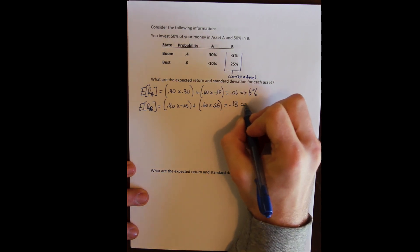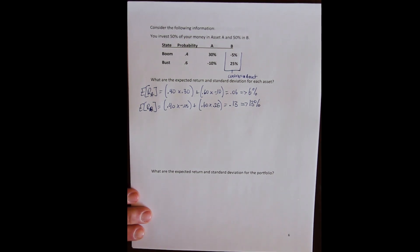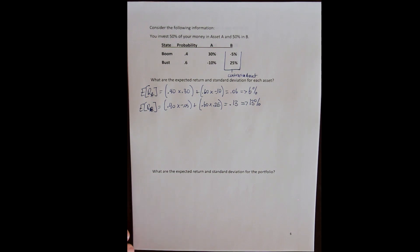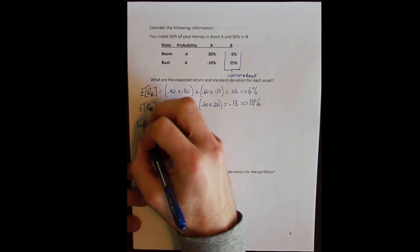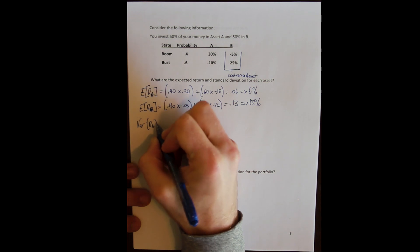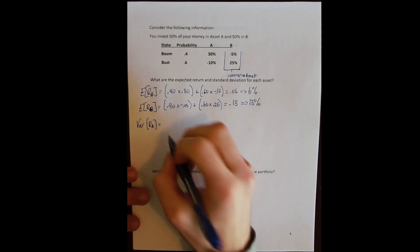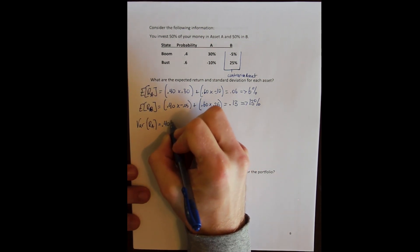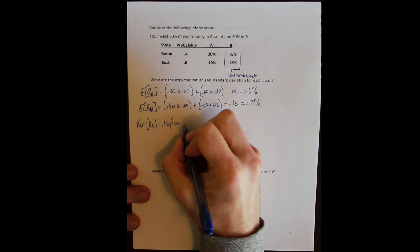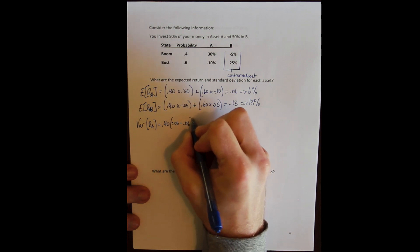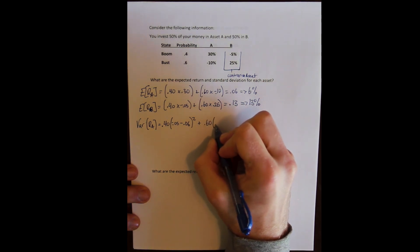That gives asset B an expected return of 13%. So our contrarian asset has more than double the expected return of our standard asset. But we need to look at risk before we fully understand these two assets. The variance is the probability of each state times the squared difference between the actual return in that state and the expected return.